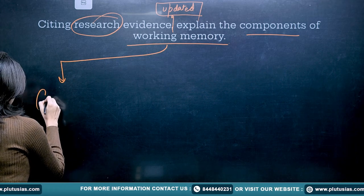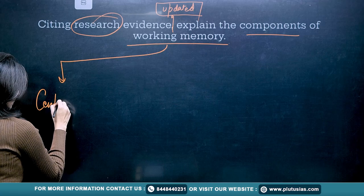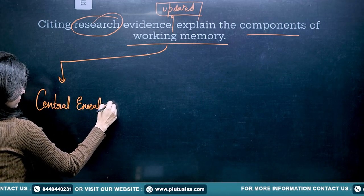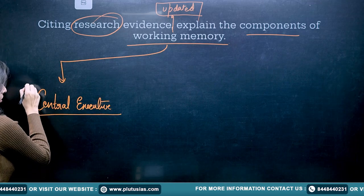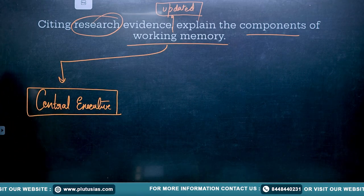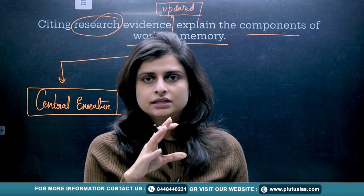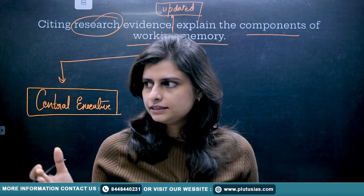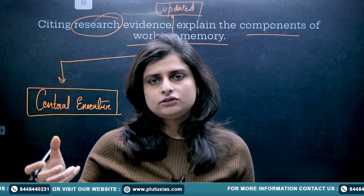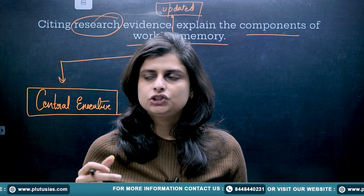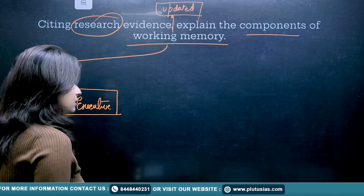Now let's see what the components of working memory are and what research evidences explain them. The first component is the central executive system. The central executive system of working memory decides, at the initial level, which information you are actually going to process. It handles the information that is stored and which needs to be updated — the very first part of working memory starts from here.